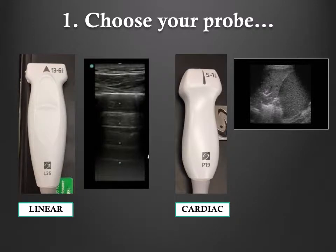For a lung ultrasound, choose your probe based on the clinical question. If you're solely concerned with the presence or absence of pneumothorax, use the linear probe. If you're trying to diagnose a parenchymal process, use the cardiac probe.